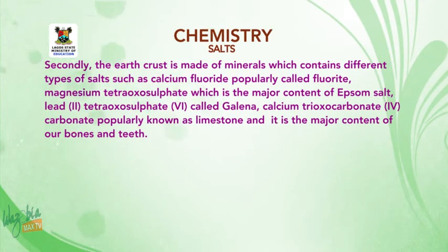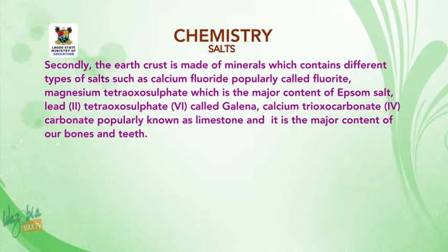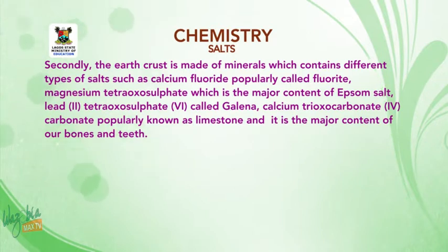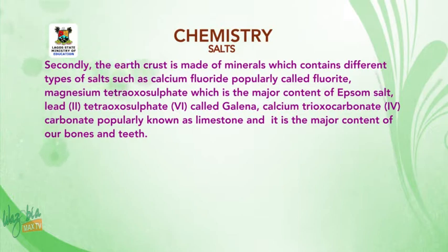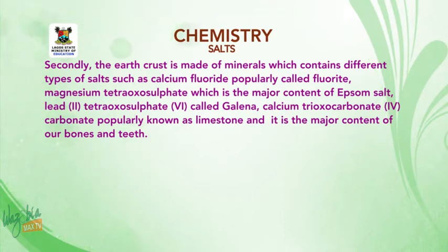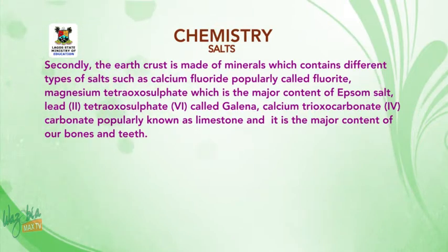The earth's crust is made of minerals which contain different types of salts, such as calcium fluoride, popularly called fluorite; magnesium tetraoxysulfate 6, which is a major content of Epsom salt; lead tetraoxysulfate 6 called galena; and calcium trioxycarbonate 4, popularly known as limestone, which is the major content of our bones and teeth.